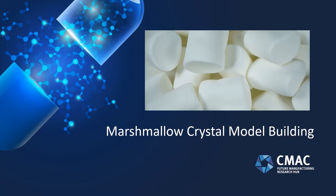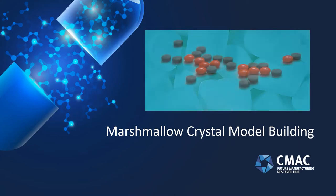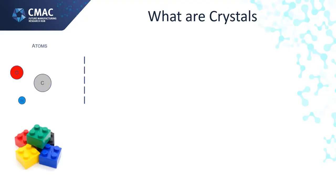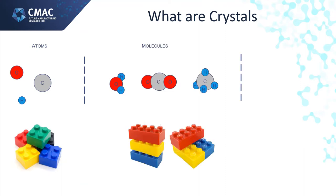But first, let's talk about what a crystal is. Atoms are the basic building block of all matter and are the smallest unit of a chemical element, just like these lego pieces below. A molecule, on the other hand, is a group of two or more atoms that are held together by bonds — imagine molecules as a few lego blocks joined together.